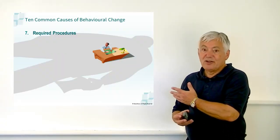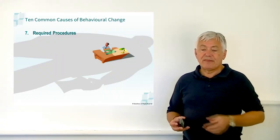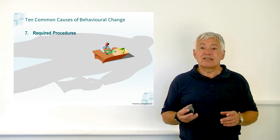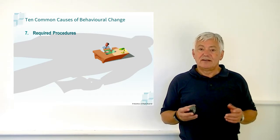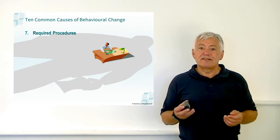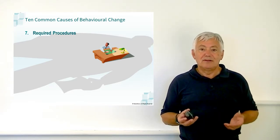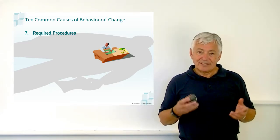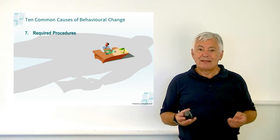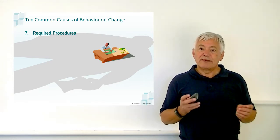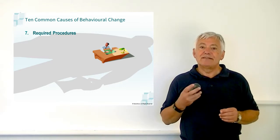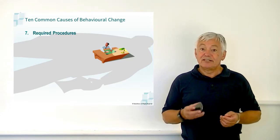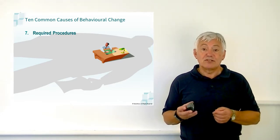Seventh in our list: required procedures. Complex and difficult tasks are best achieved through careful preparation and rigorous execution of procedures. Some situations that benefit from carefully considered procedures include defusing a bomb, carrying out pre-flight checks, aircraft maintenance and extinguishing a major fire. If failure to complete a vital step would be catastrophic, then it is appropriate to publish and enforce a required procedure to prevent or minimise costly mistakes.